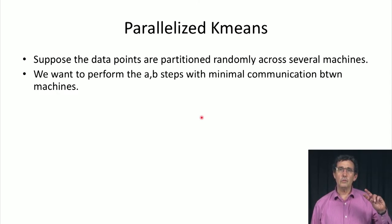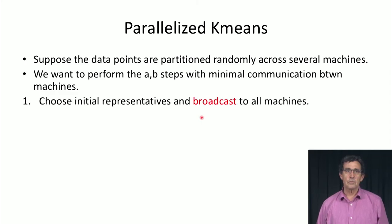And we want to perform the A-B steps, like the mean and the association with the center and then taking the mean, and the association with the center and taking the mean. So the idea is that you choose the initial representatives, maybe using k-means plus plus, and you broadcast them to all of the machines. So now all of the machines have the same representatives.